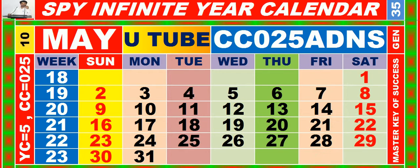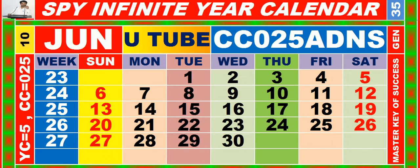Calendar for the month of May, having calendar code equal to 025. Calendar for the month of June, having calendar code equal to 025.